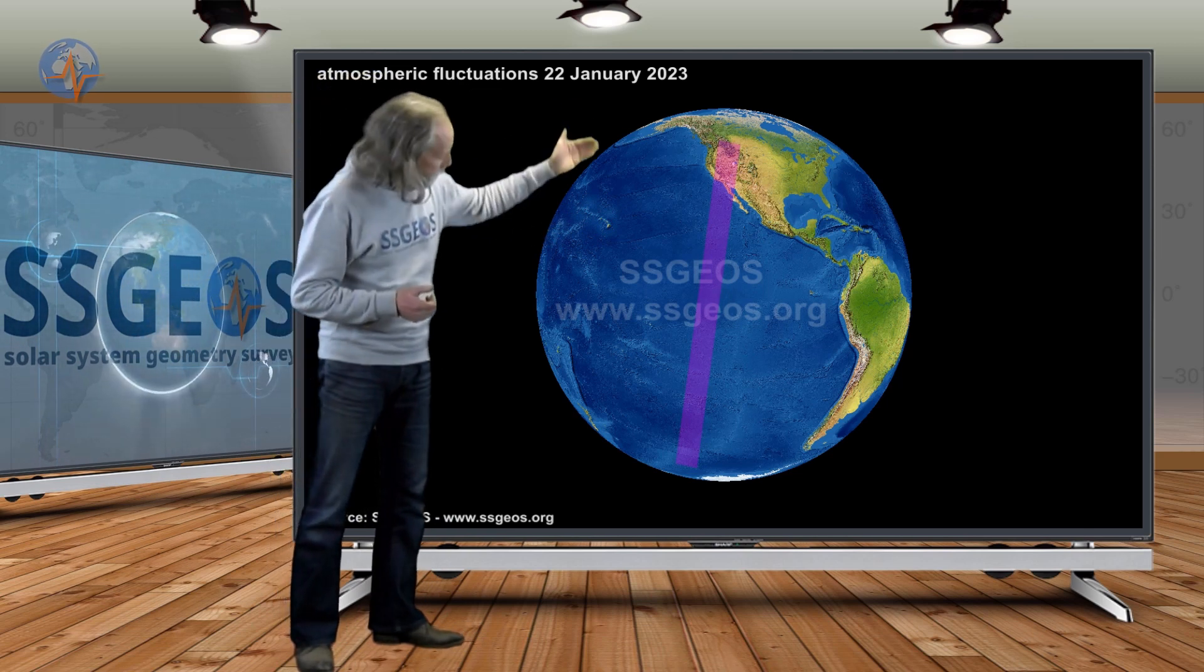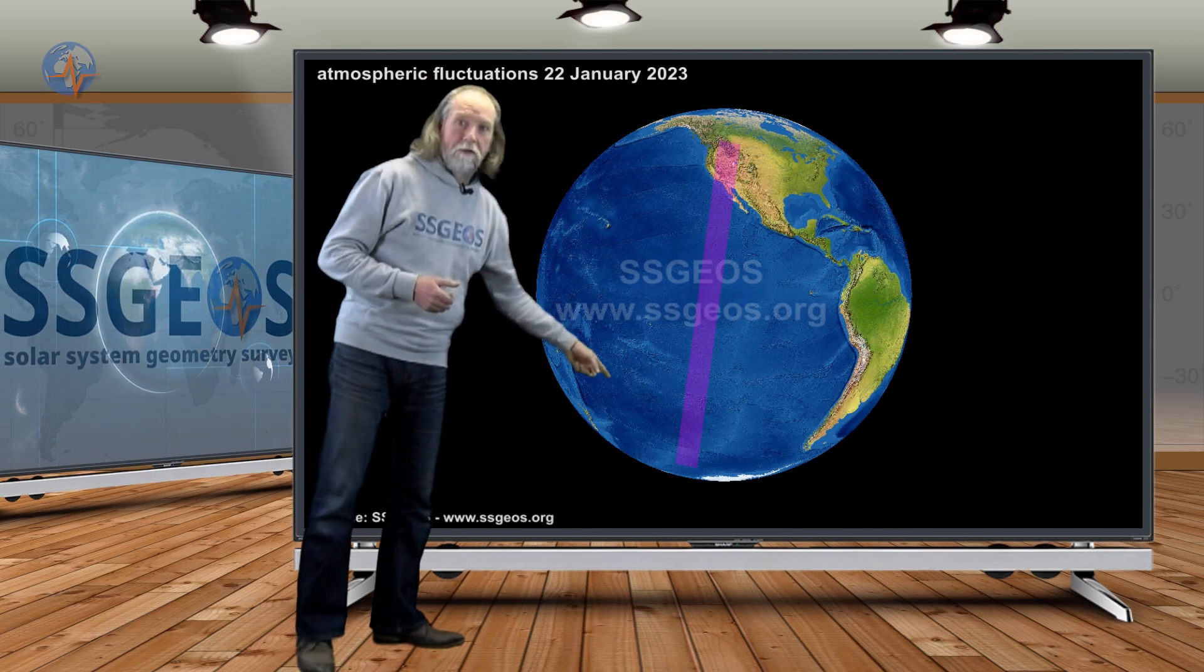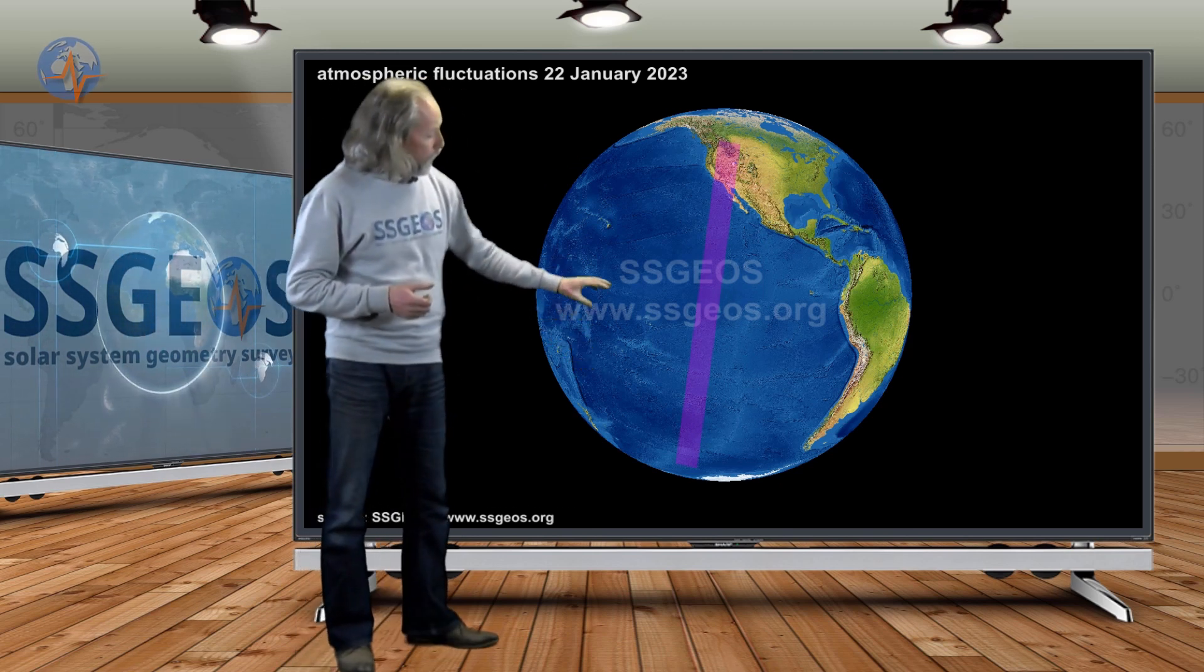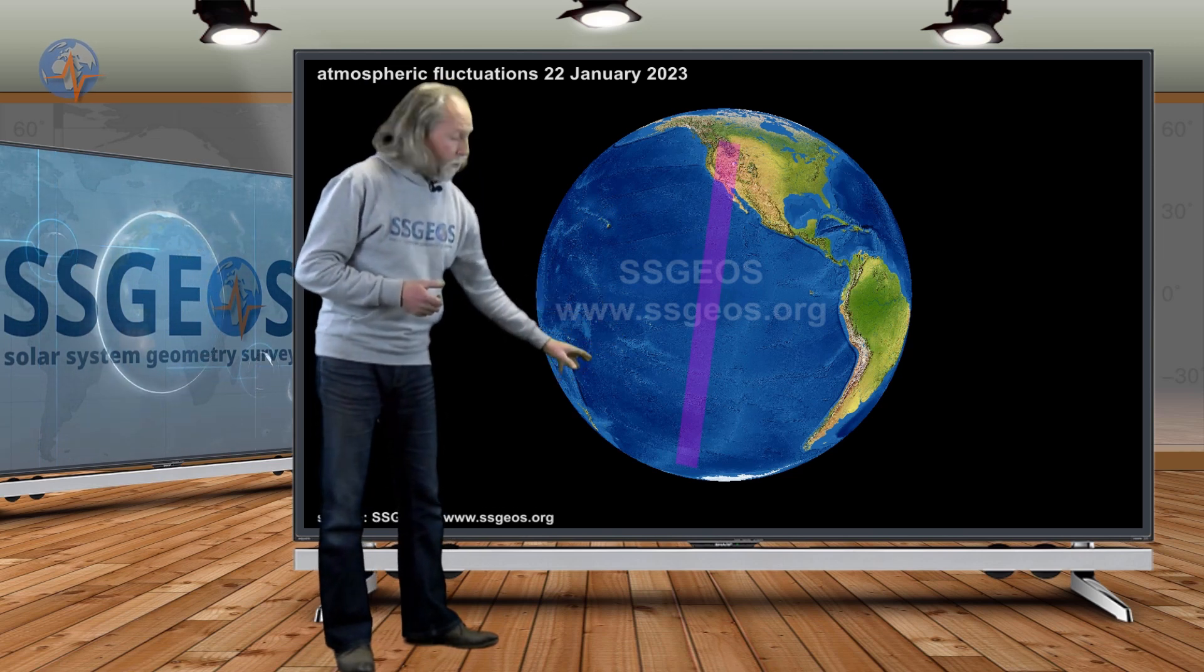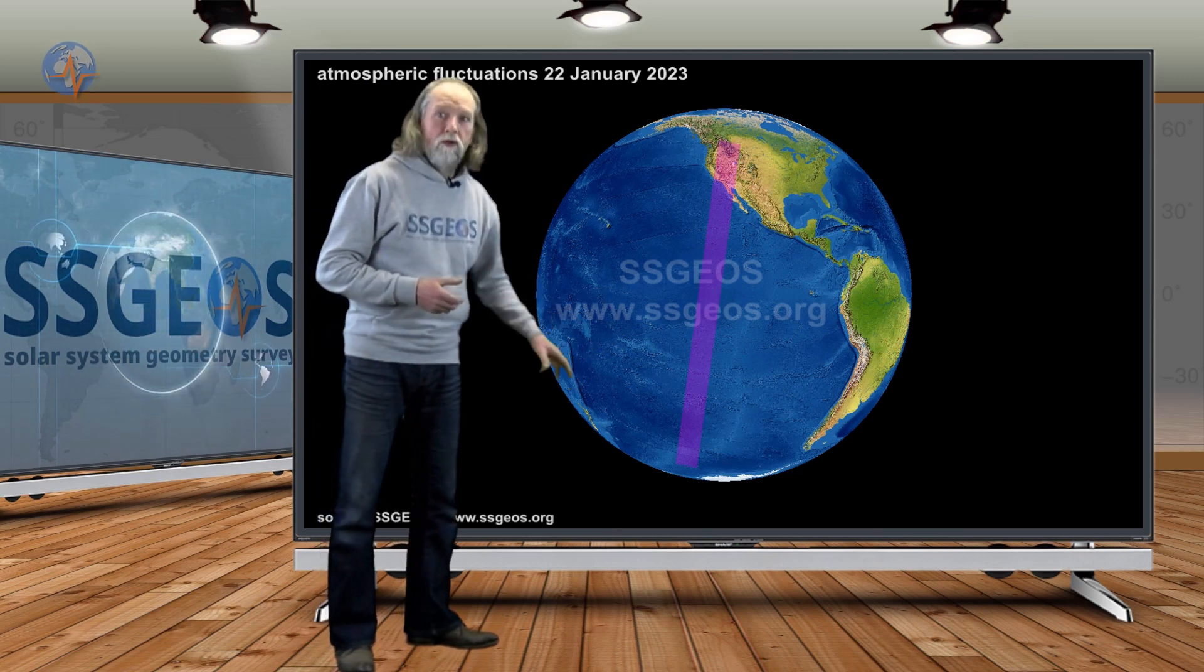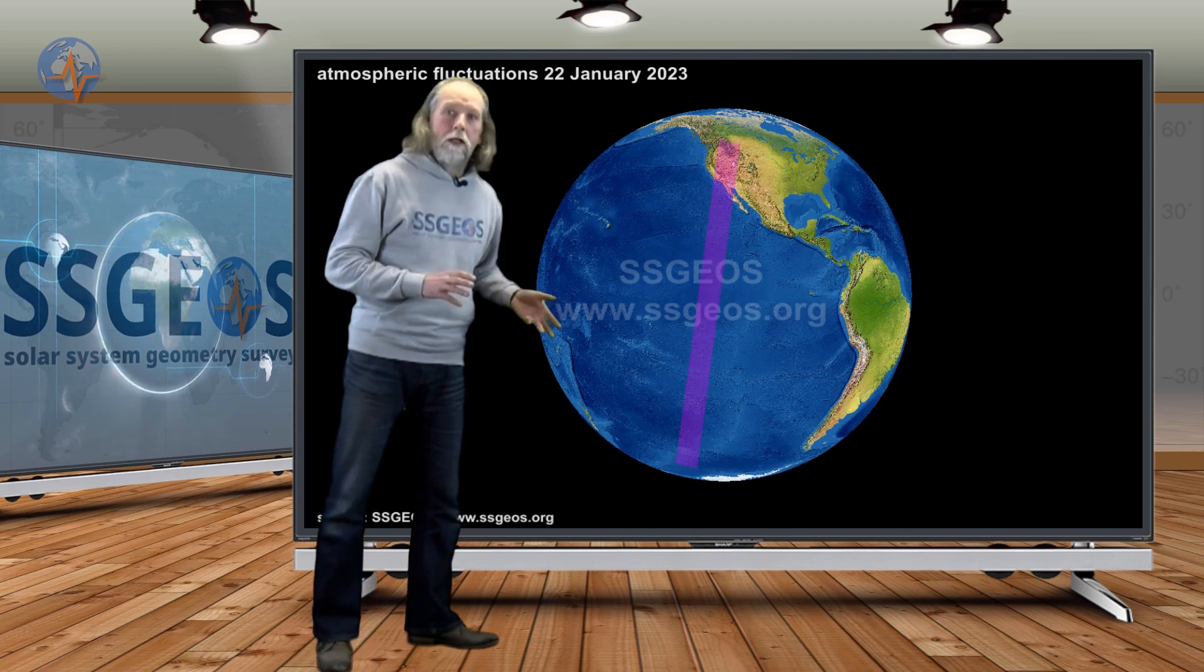It is also possible, if you follow the fluctuations to the south, that the seismic activity will occur on the Southern East Pacific Rise, or even further down the Pacific Antarctic Ridge. And that would be borderline six most likely.